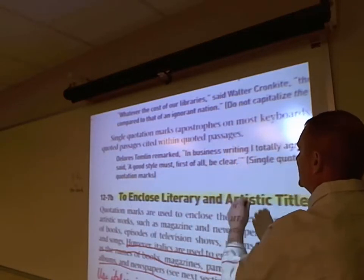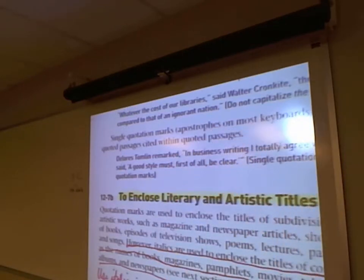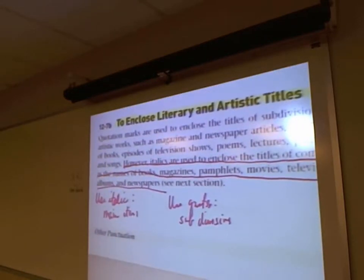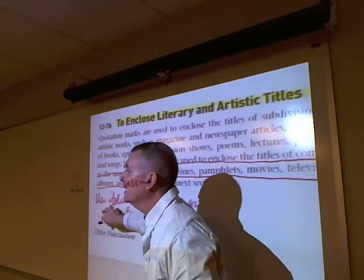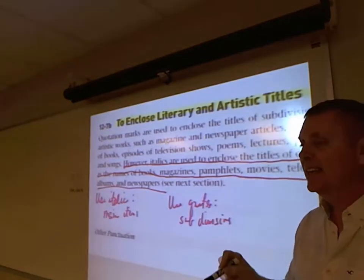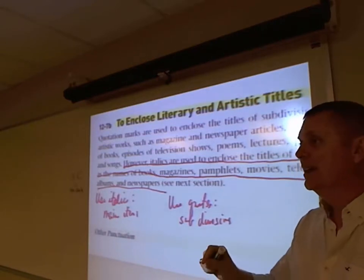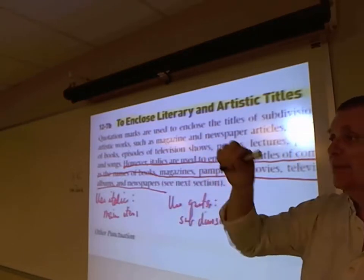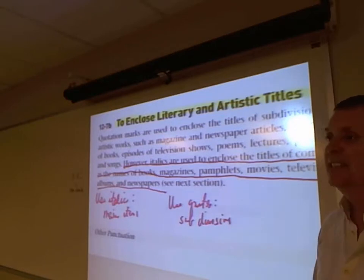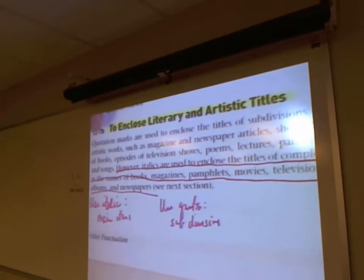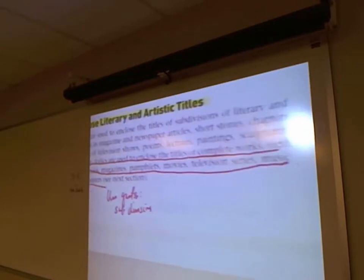Literary and artistic titles: the main thing — a TV show name, magazine name, movie name — is italicized. Anything that's a category within something else is placed in quotes. Quotation marks enclose titles of subdivisions: magazine and newspaper articles, short stories, chapters of books, episodes of television shows, poems, lectures, paintings, sculptures, and songs. Italics enclose titles of complete works: books, magazines, pamphlets, movies, television series names, music albums, and newspapers.